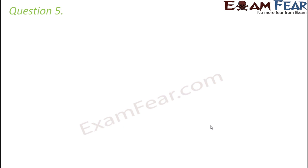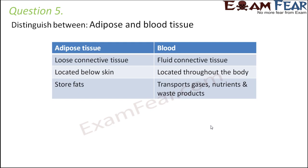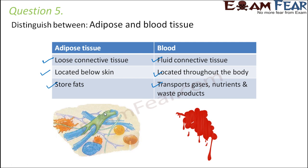Question five: distinguish between adipose tissue and blood tissue. Both are connective tissues, but blood is a fluid connective tissue whereas adipose is a loose connective tissue with lots of empty space between cells. Adipose tissue is located below the skin and stores fats, while blood is located throughout the body and transports gases, nutrients, and waste products. Excess adipose tissue leads to obesity.